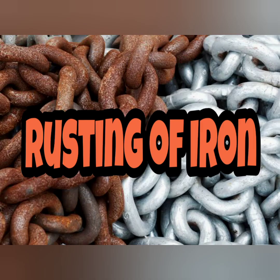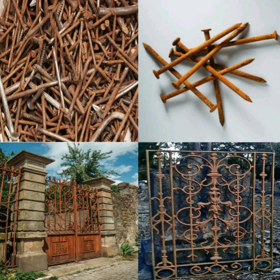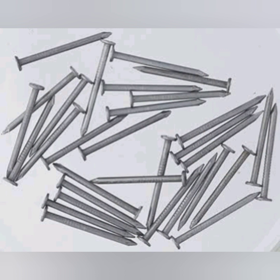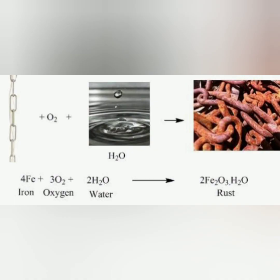What do you understand by rusting of iron? You have noticed iron objects like iron nails or iron gates covered with a reddish-brown or dark orange colored substance. It is called rust. How is it formed? When an iron object is left exposed to moist air, it chemically reacts with oxygen and water in the air to form a powdery substance called iron oxide, which we call rust.